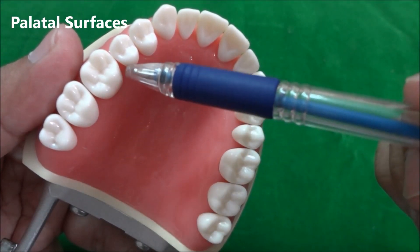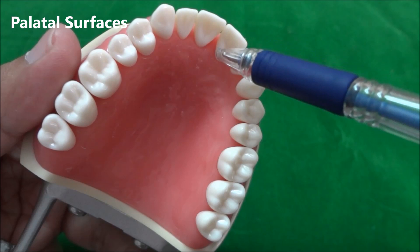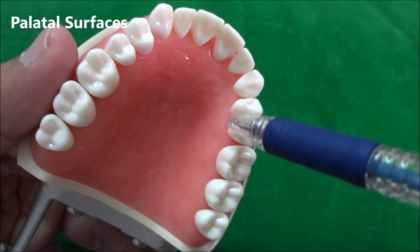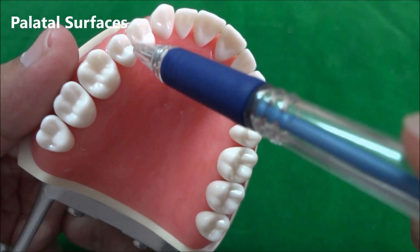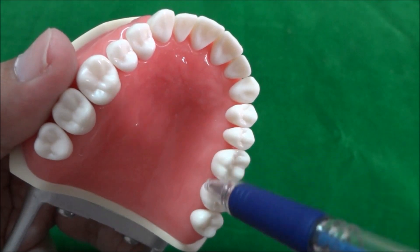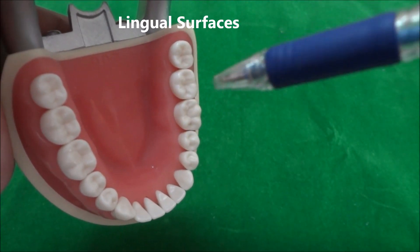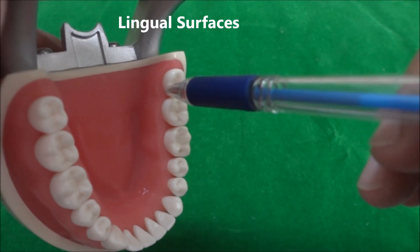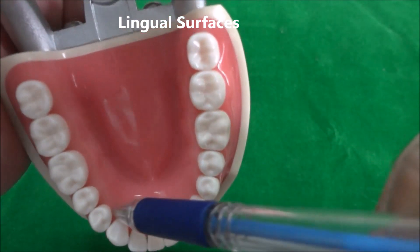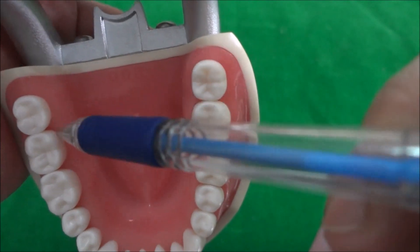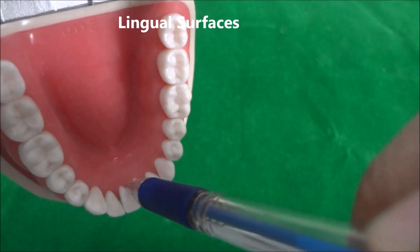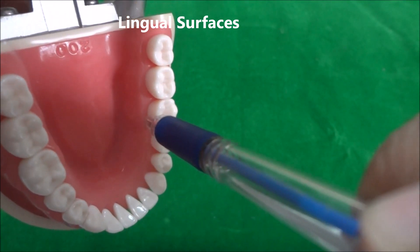In the maxillary arch, the surface of the tooth that is just adjacent to the palate is known as the palatal surface. In the mandibular arch, this surface is just adjacent to the tongue, so these surfaces are known as the lingual surfaces.